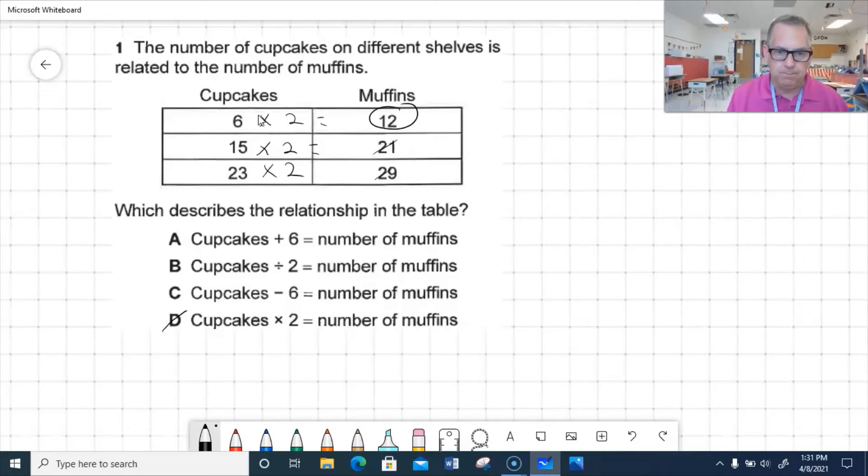So I see it's getting bigger for sure. There's more muffins than there are cupcakes. So we can say that there's only one other operation that makes things larger. It's going to be addition. So let's go ahead and try that out. So cupcakes plus 6. So 6 plus 6 does equal 12. That's true. 15 plus 6. 15 plus 6 does equal 21. And 23 plus 6 does equal 29. So it does look like that's correct. I can eliminate these two because it wouldn't be dividing by 2 because that would make it smaller. That means there would be less muffins than there are cupcakes. And it can't be minus 6 because, like I said, it's getting bigger. So our correct answer was A.